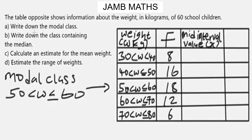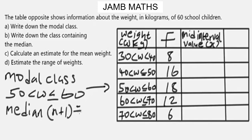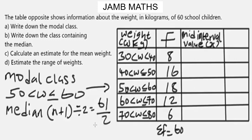For part b, we need to write down the class containing the median. For the median, we make use of the formula (n + 1) ÷ 2. Our n is the sum of the frequencies, which is sigma f. When you add everything together you get 60, so this gives us (60 + 1) ÷ 2 = 61 ÷ 2 = 30.5.